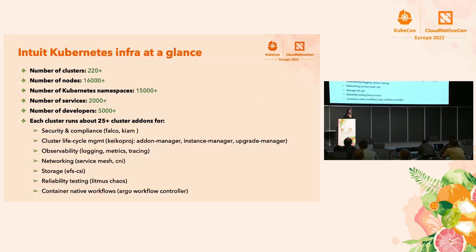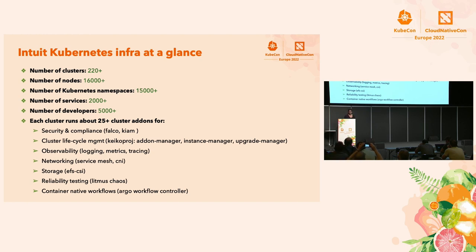Before we get started, I want to give a quick introduction about our Kubernetes-based infrastructure. We run about 220-plus clusters, and they average about 16,000 nodes. This number of nodes actually goes up pretty high during our tax-peak seasons. We have a number of Kubernetes namespaces, roughly about 15,000. We run about 2,000 production services on this Kubernetes-based infrastructure, serving about 5,000 developers. And we have about 17,000 assets that we manage with this.